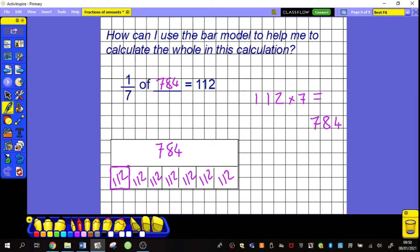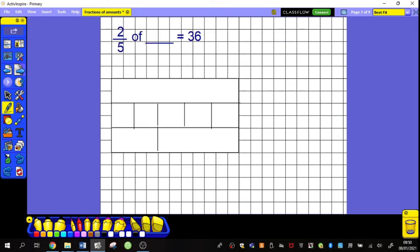We're going to use that knowledge now to try and calculate this one. Now I want to find two fifths of something. Again, I'm trying to find the whole thing. Two fifths of the whole is thirty-six this time.